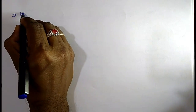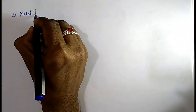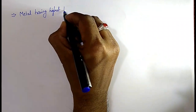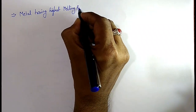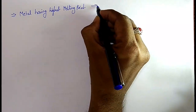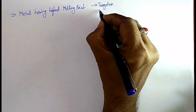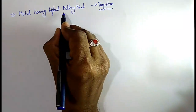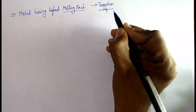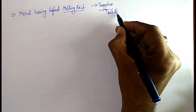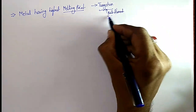The next important property: metal having the highest melting point. The element is tungsten. Tungsten has the highest melting point among metals, and that is why tungsten is used for making bulb filaments.